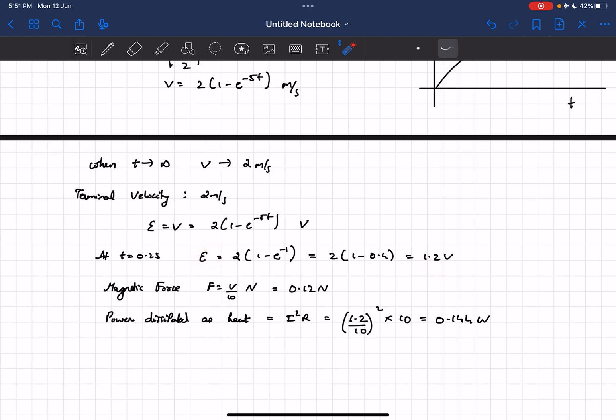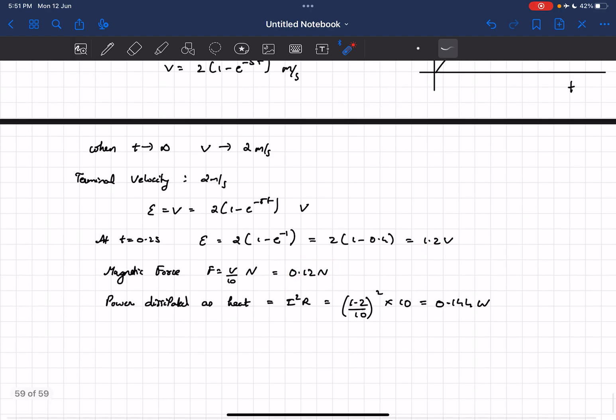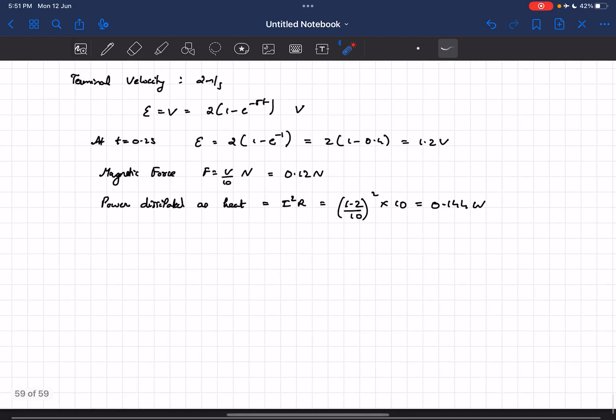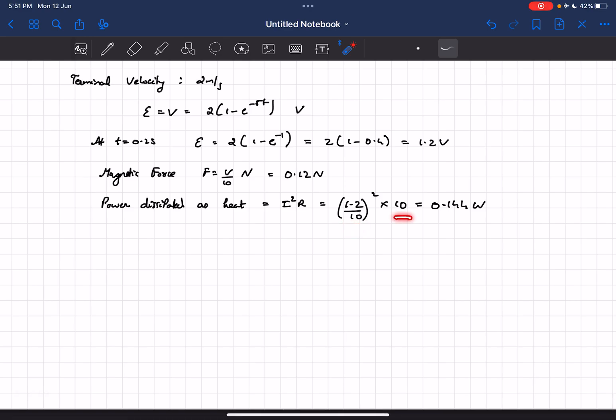Now the magnetic force we earlier computed to be v by 10 numerically, so which would technically just be one tenth of this, so it will be 0.12 newton. And the power dissipated as heat through the resistor we all know would be I squared R, and I we earlier computed to be E by R or v by 10, so it'll be 1.2 by 10 squared times 10 and it'll come out to be 0.144 watt.